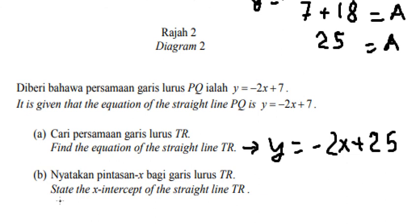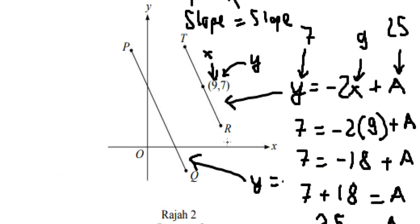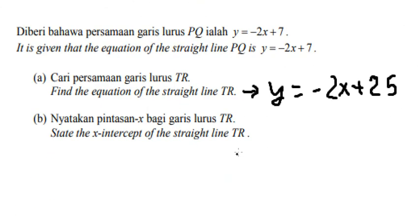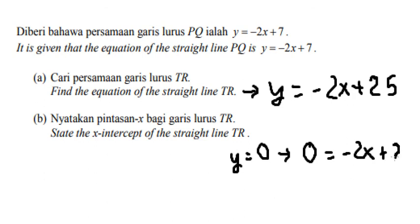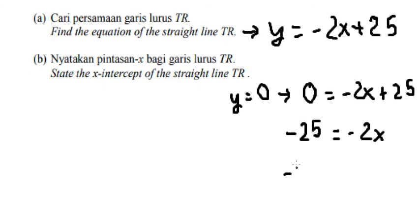Question number two: find the x-intercept of the straight line TR. At the x-intercept, y equals 0. So we substitute y equals 0 into our equation and solve for x. We move 25 to the left to get negative 25, then divide both sides by negative 2.